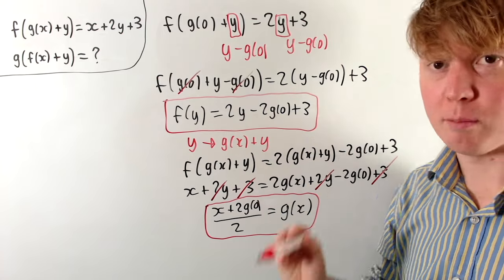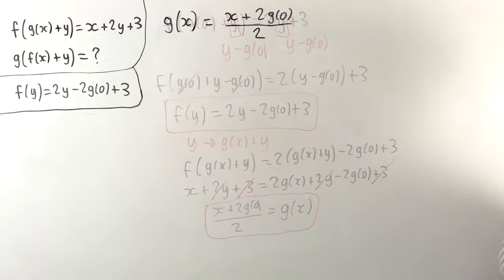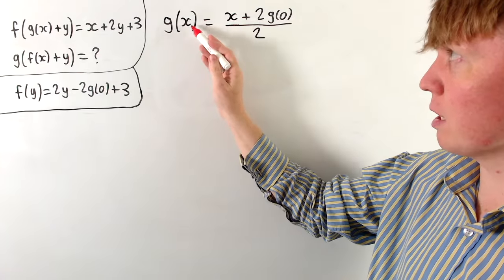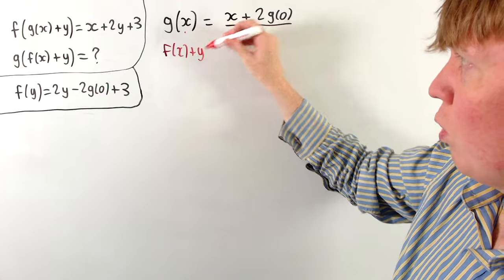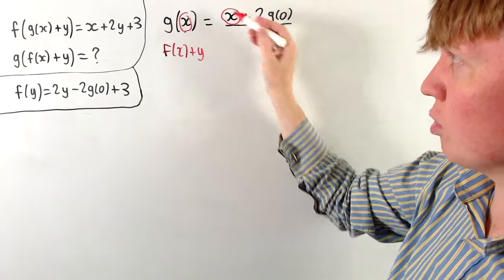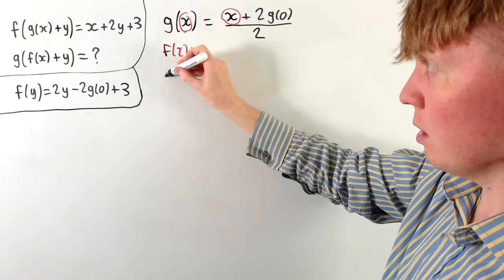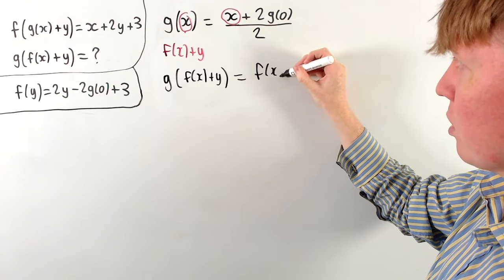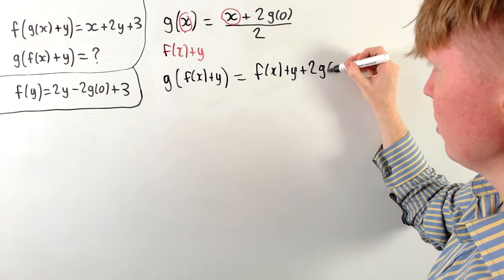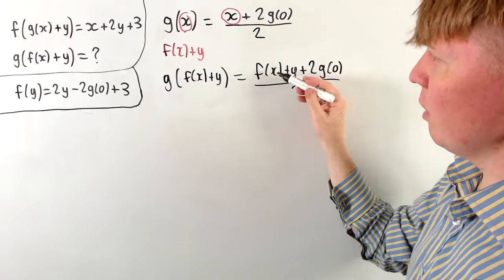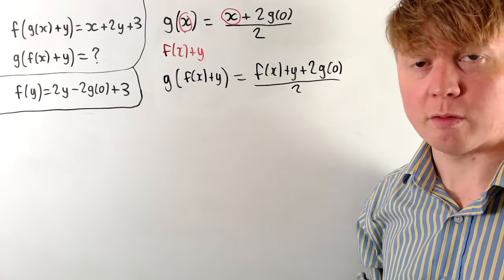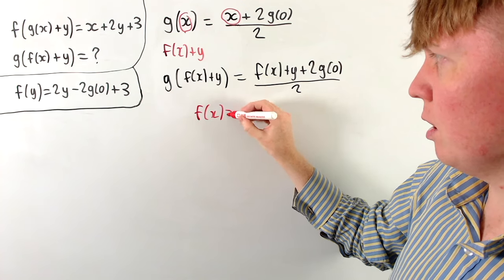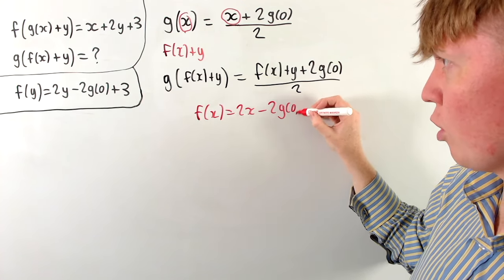Now remember that we're trying to find g of f of x plus y to solve the problem. At this point we substitute f of x plus y in place of x in our expression for g. This gives us on the left hand side g of f of x plus y, which equals f of x plus y plus 2 times g(0), all divided by 2. We can replace f of x using our known expression: replacing y by x gives f of x equals 2x minus 2 times g(0) plus 3.